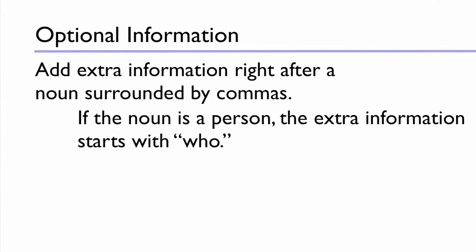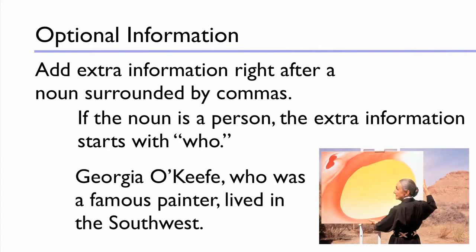If the noun is a person, you'll start the extra information with the word who. So, Georgia O'Keeffe, who was a famous painter, lived in the Southwest. You're going to add the extra information. It doesn't need to be there, so we surround it with commas. And it's a great way to strengthen a boring sentence.